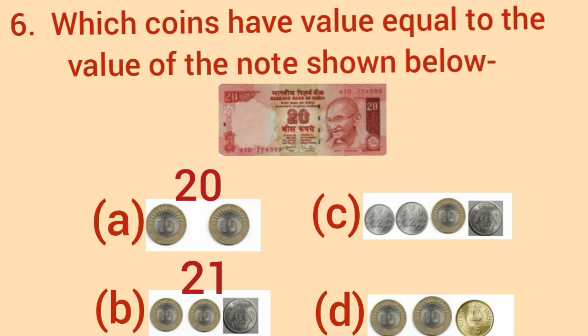And, in option C, there are 2 coins of 2 rupees, 1 coin of 10 rupees, 1 coin of 1 rupee. So, these are 15 rupees. In option D, there are 10 rupees coin, one more 10 rupees coin, 1 coin of 5 rupees. So, these are 25 rupees.